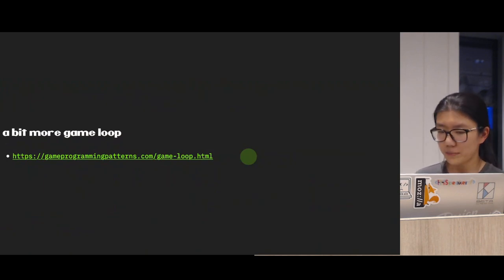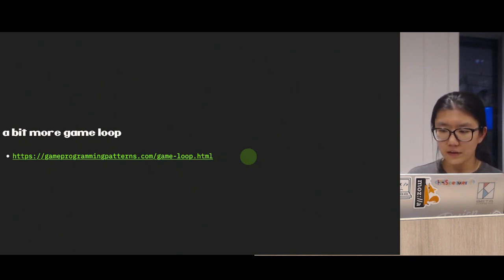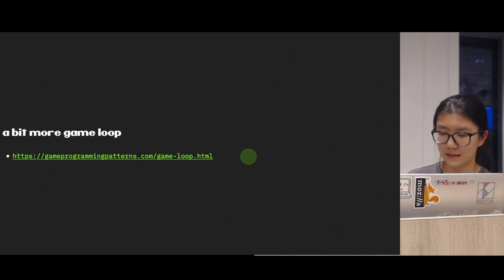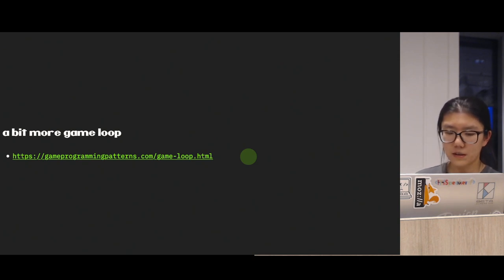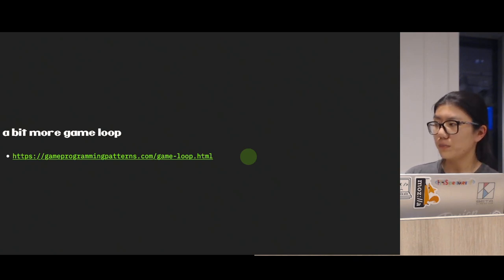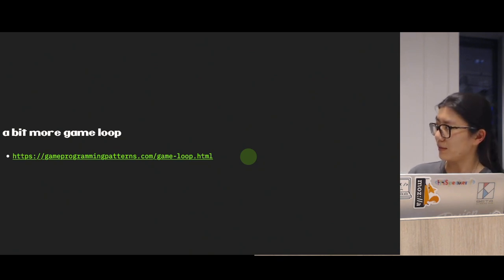If you want to learn more about game loops, you can go read this book — we're only very shallowly talking about it today, but it's a very interesting topic by itself and completely worth a separate talk. Its original intent was to align game processes across different CPU times with real time: you can slice off extra time or match your rendering with respect to real physical time. I also learned last week from Sean's talk that VR uses a work loop and time slicing to keep time in check, similarly to the game loop.